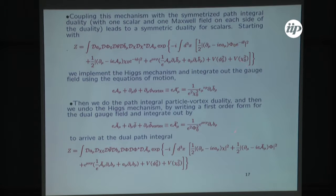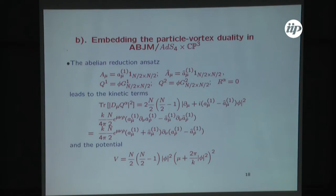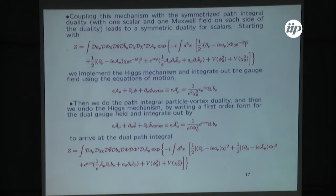This allows us to embed the duality into the ABJM model, because now both actions look like something we have inside ABJM — there are kinetic terms for scalars and Chern-Simons terms of this type with one gauge field, a derivative, and another gauge field. I can embed the duality inside ABJM in the following way: I make this embedding of the fields A_mu^1, A-hat_mu^1, and phi inside the fields of ABJM, but the fields of only half of the N×N matrix.